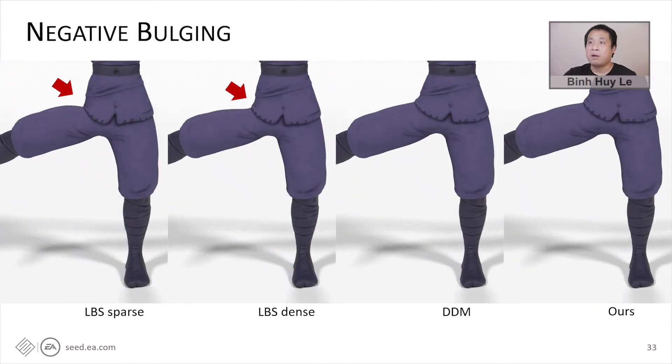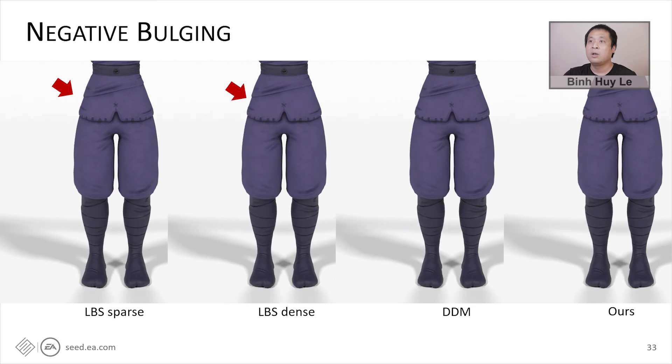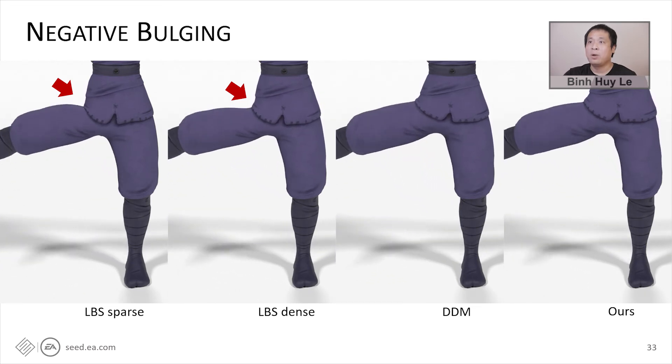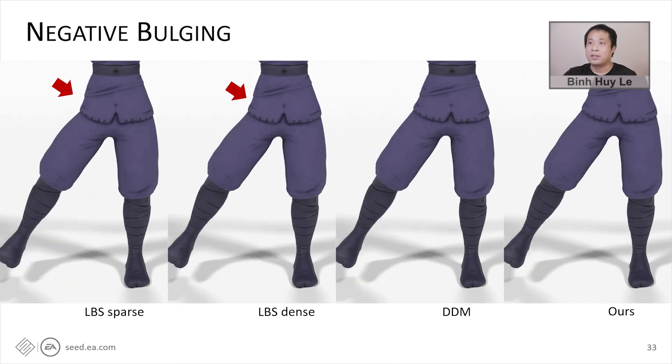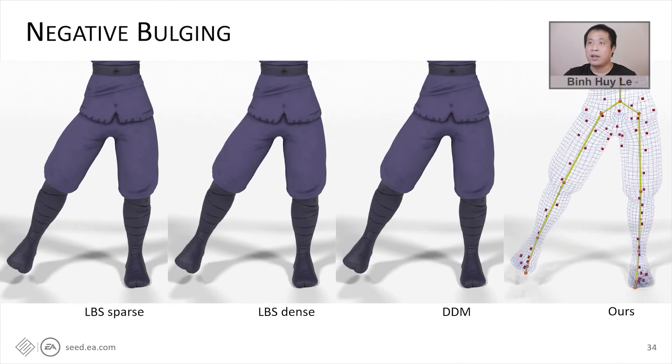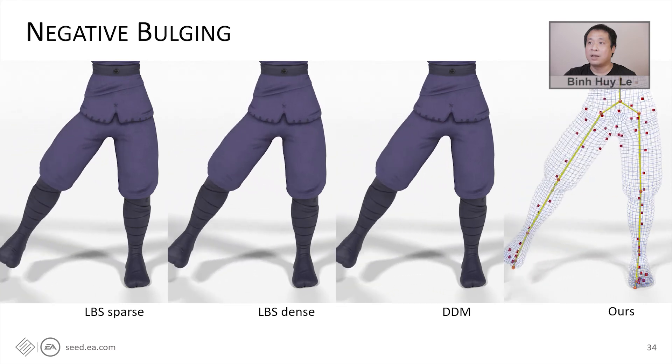And here's a visualization of our virtual bones animation. Another effect that our model inherits from DDM is negative bulging, which can be used to improve the deformation near the hip joint. Without utilizing this effect, we can see a fold over artifact as shown on the left with LBS. And again, here's the visualization of our virtual bones animation.